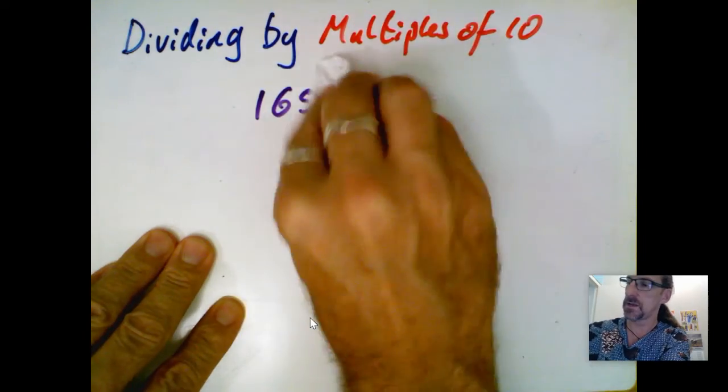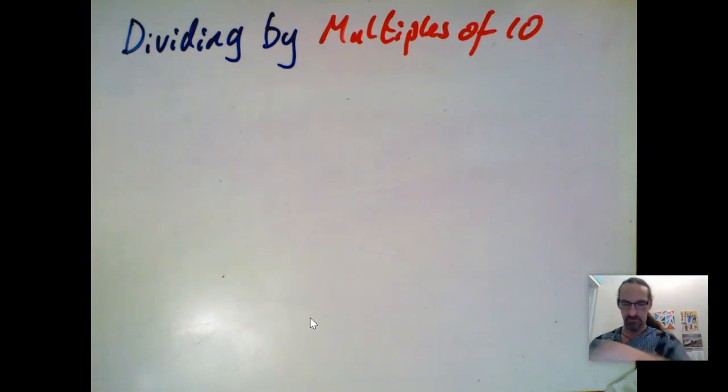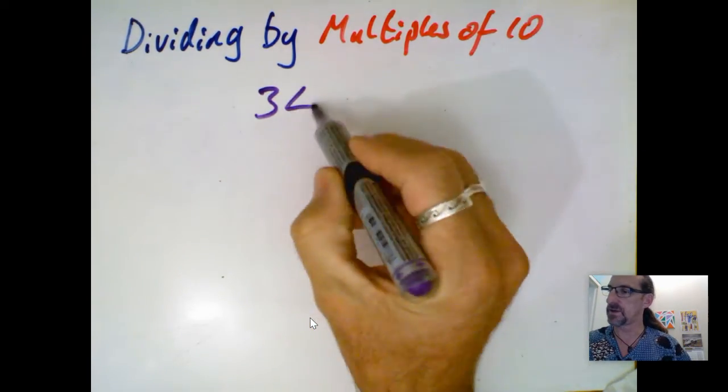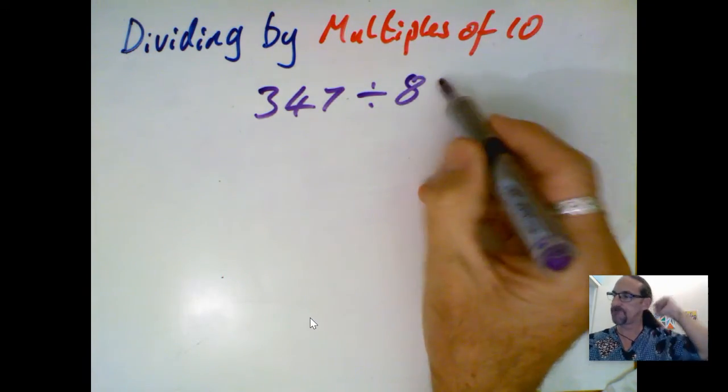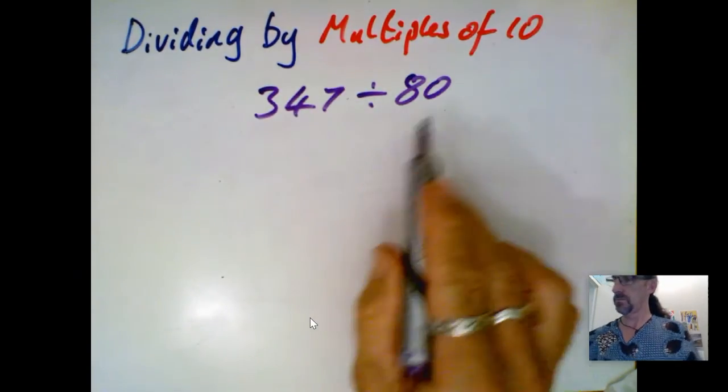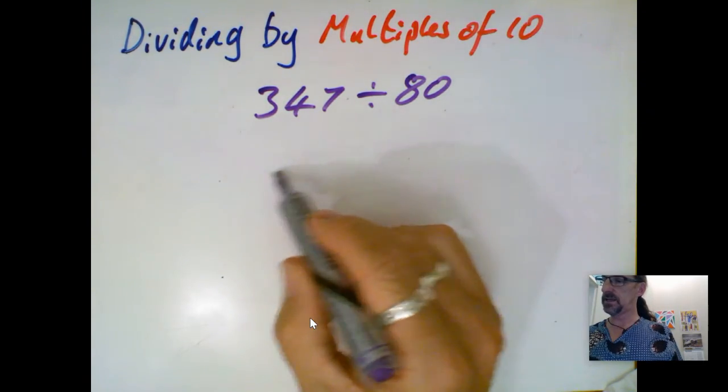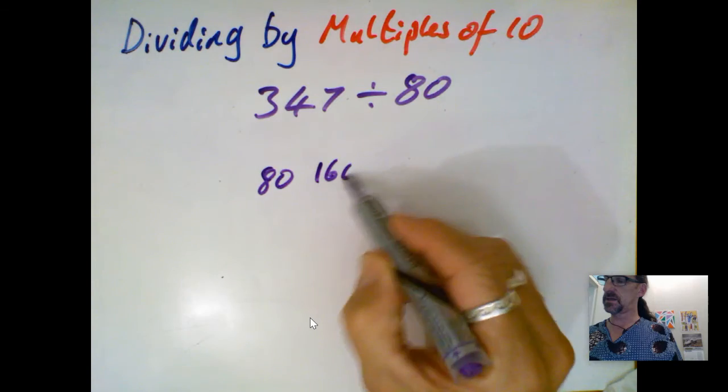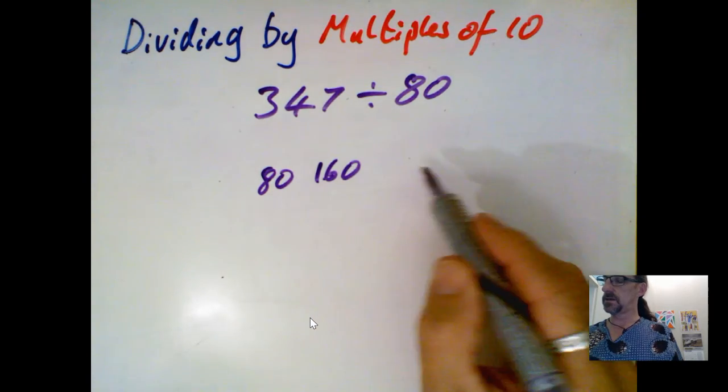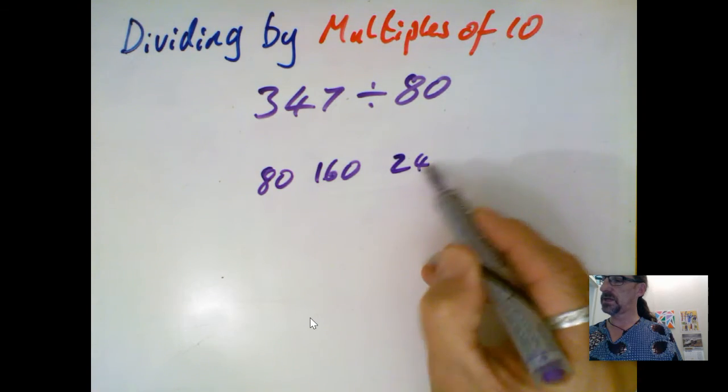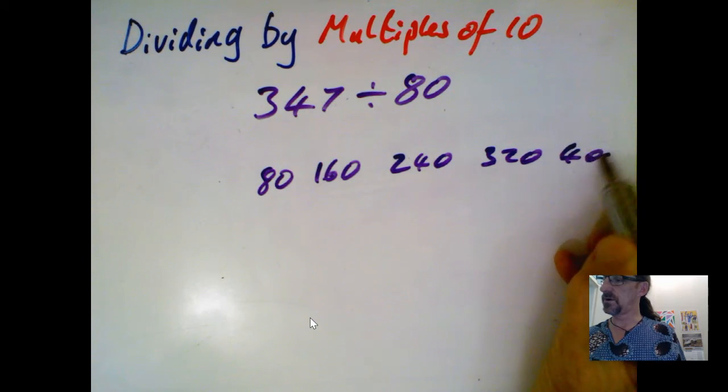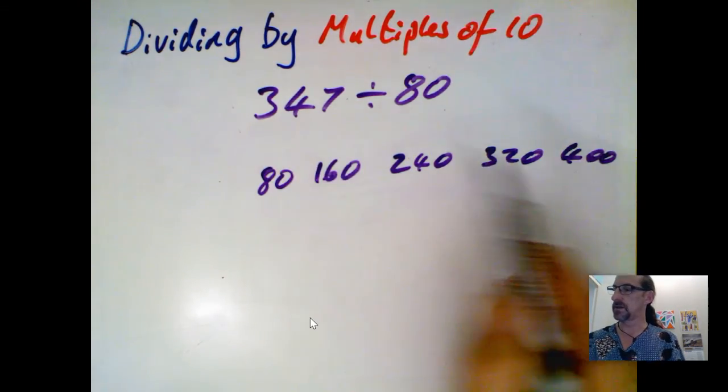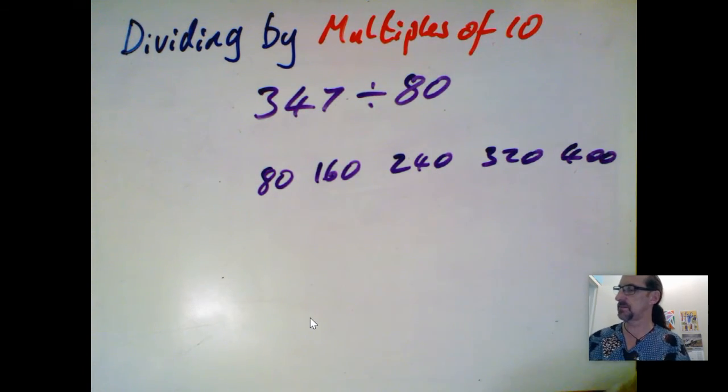All right, let's take a larger one. Another example, 347 divided by 80. So let's see what happens here. Counting in 80s: 80, 160, 240, 320, and 400. So I've gone over my number here, so this was 320, there were four 80s in 320. Let's keep that in our brain for the moment.